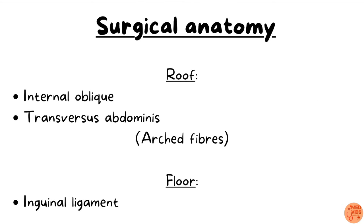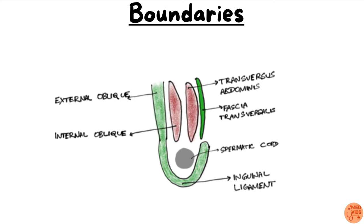The roof of the inguinal canal is formed by the arched fibers of the internal oblique and transversus abdominis muscles. The floor is formed by the inguinal ligament, which is an extension of the external oblique aponeurosis. Superiorly we have the arched fibers of transversus abdominis and internal oblique, while the floor is formed by the inguinal ligament.